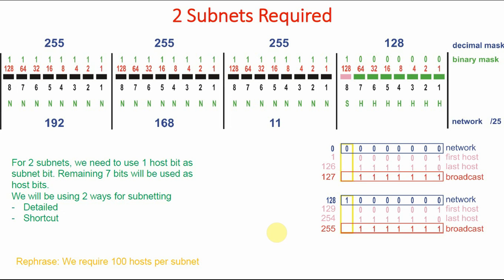Our requirement is to create two subnets. For two subnets, we need to use one host bit as a subnet bit. The remaining seven bits will be used as host bits. There are two ways of subnetting: the detailed method and the shortcut method. We will first discuss the detailed method.